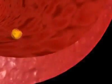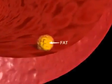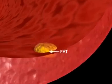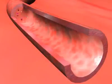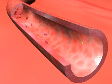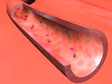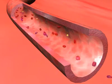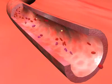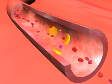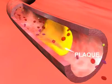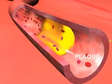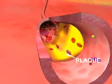Over time, the inside of these arteries develop fibro-fatty plaques of different sizes. These plaques are made of cholesterol and other substances floating through the bloodstream, such as inflammatory cells, proteins, and calcium. Many of the plaque deposits are hard on the outside and soft on the inside.